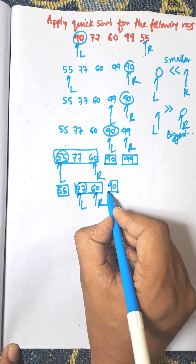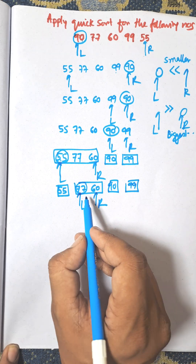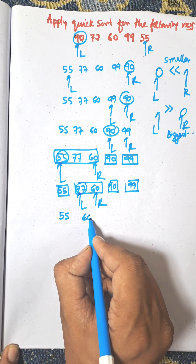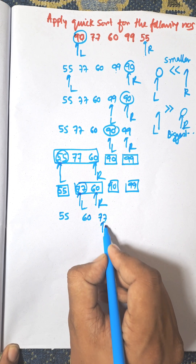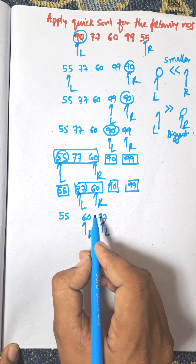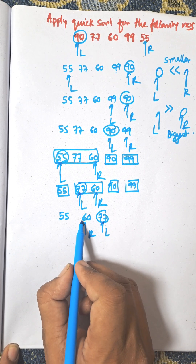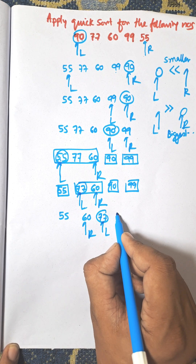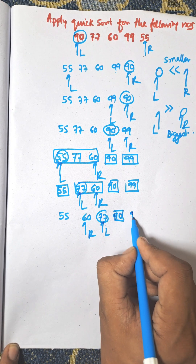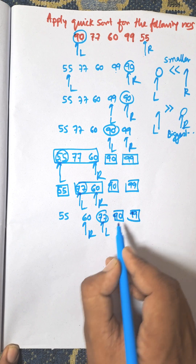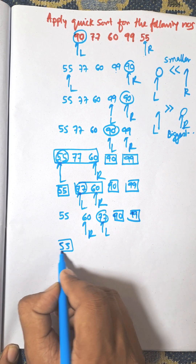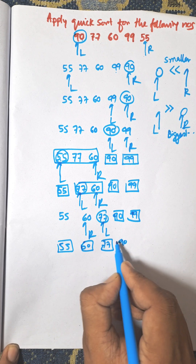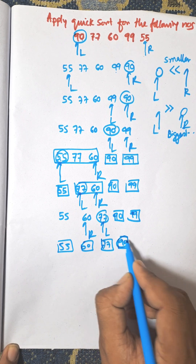90 and 99 are already sorted. In the partition with 77 and 60: 77 is greater than 60, so they are swapped to give 60 and 77. Searching right to left for a number larger than 77, we find 90, so the pointers cross. The final sorted order is: 55, 60, 77, 90, 99.